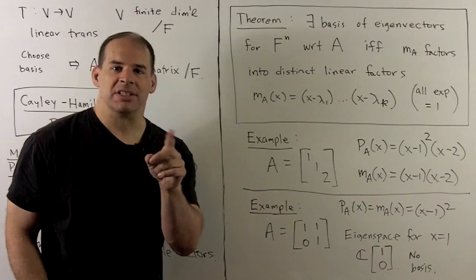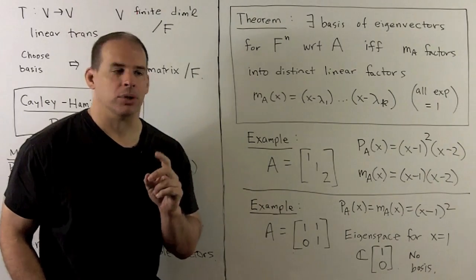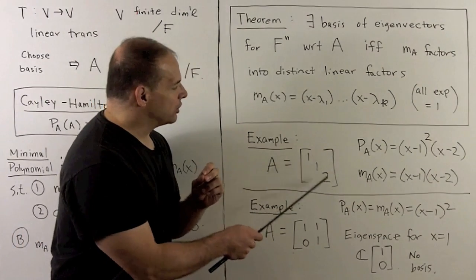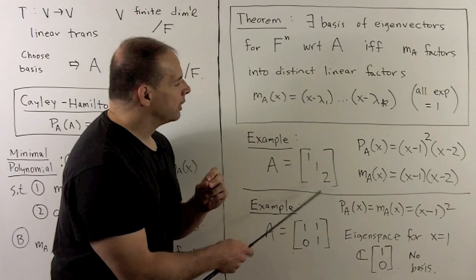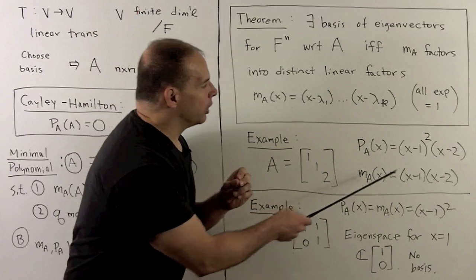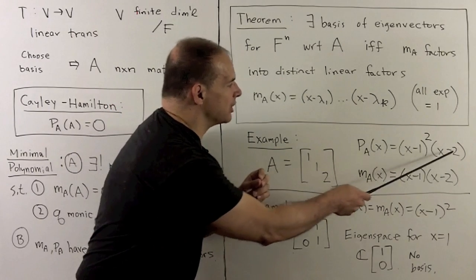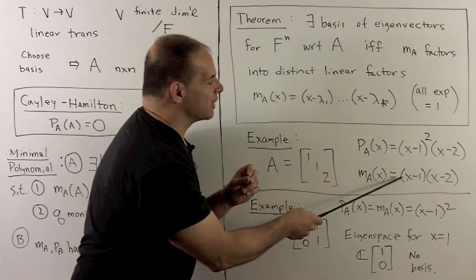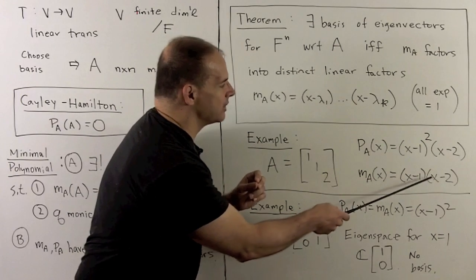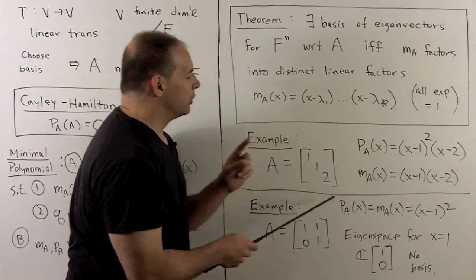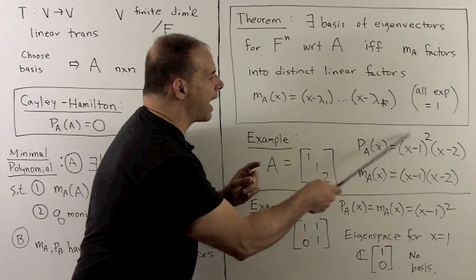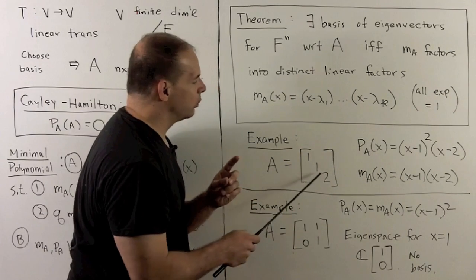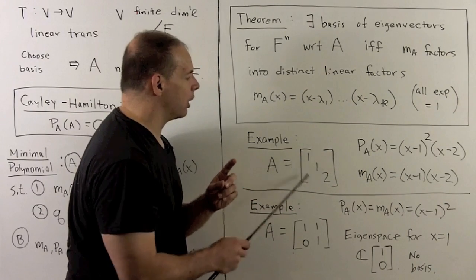For distinguishing examples, consider the diagonal matrix A given by entries one, one, two. The characteristic polynomial is (X minus one) squared times (X minus two). The minimal polynomial will be (X minus one)(X minus two). Note we don't need the extra factor, because subtracting off one once already sends those entries to zero.